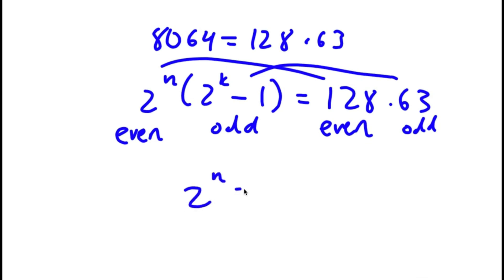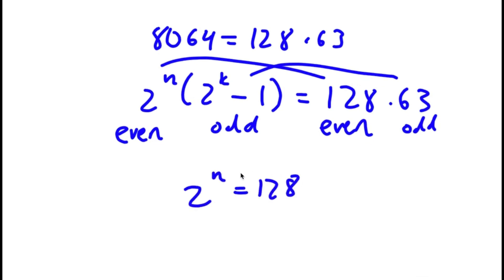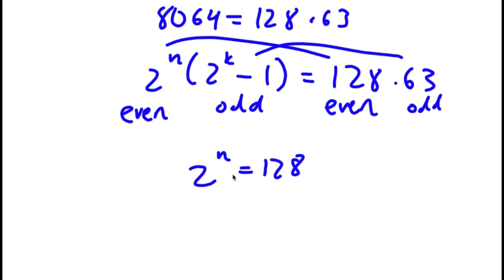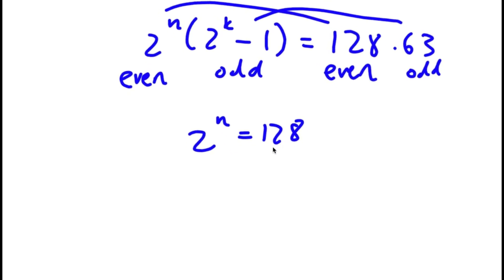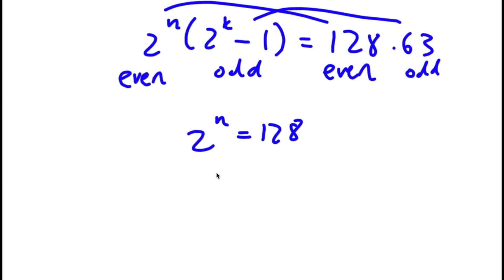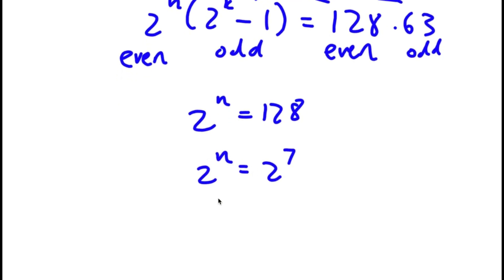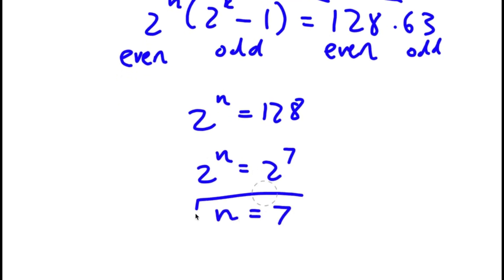So 2 to the power of n equals 128. Since 128 is the same as 2 to the power of 7, I have 2 to the power of n equals 2 to the power of 7, meaning n is equal to 7.